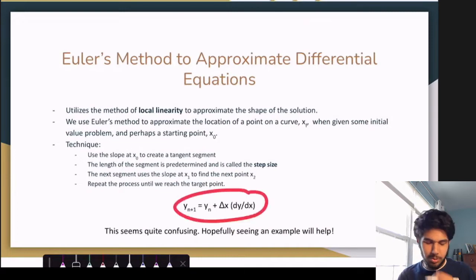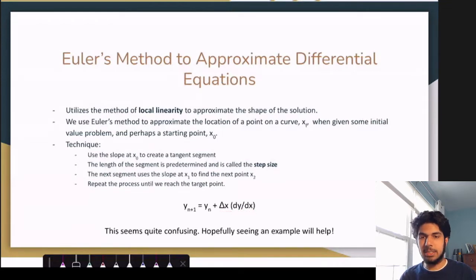So this is our equation, where we're predicting the y values using the previous y value plus our step size times the slope of the tangent line. And it seems quite confusing, so let's go through an example and see what's up.